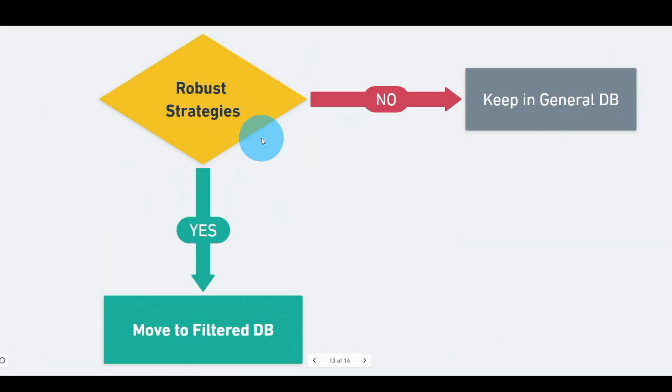The robustness test here differs from testing a normal strategy, because these strategies are only meant to find an edge — they have no filter and the exits are fixed. The indicator is tuned to a target number of trades per speed, not to find the best strategy. So robustness is extremely simple: we just want a low positive average trade and a high return-to-drawdown ratio. Strategies that don't pass go into the general database; those that pass go into the filtered database.